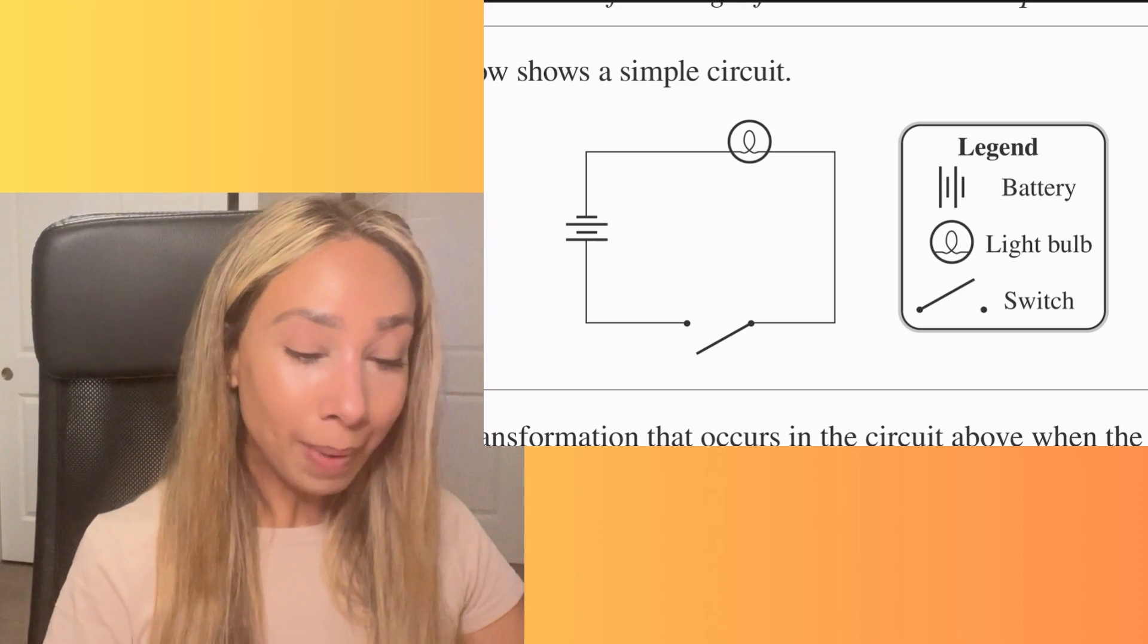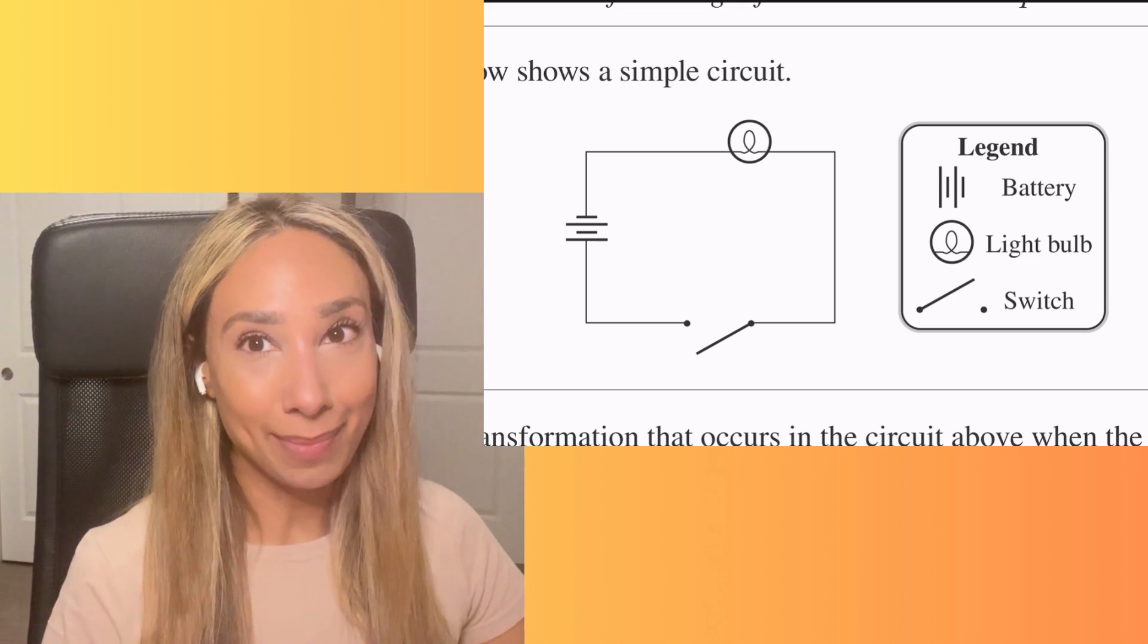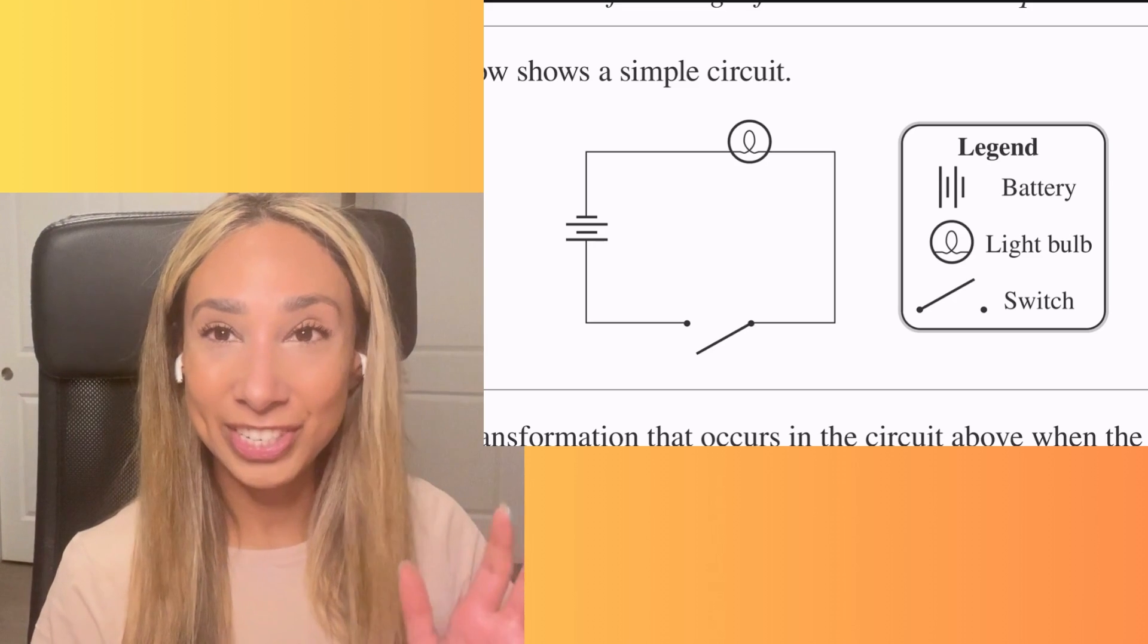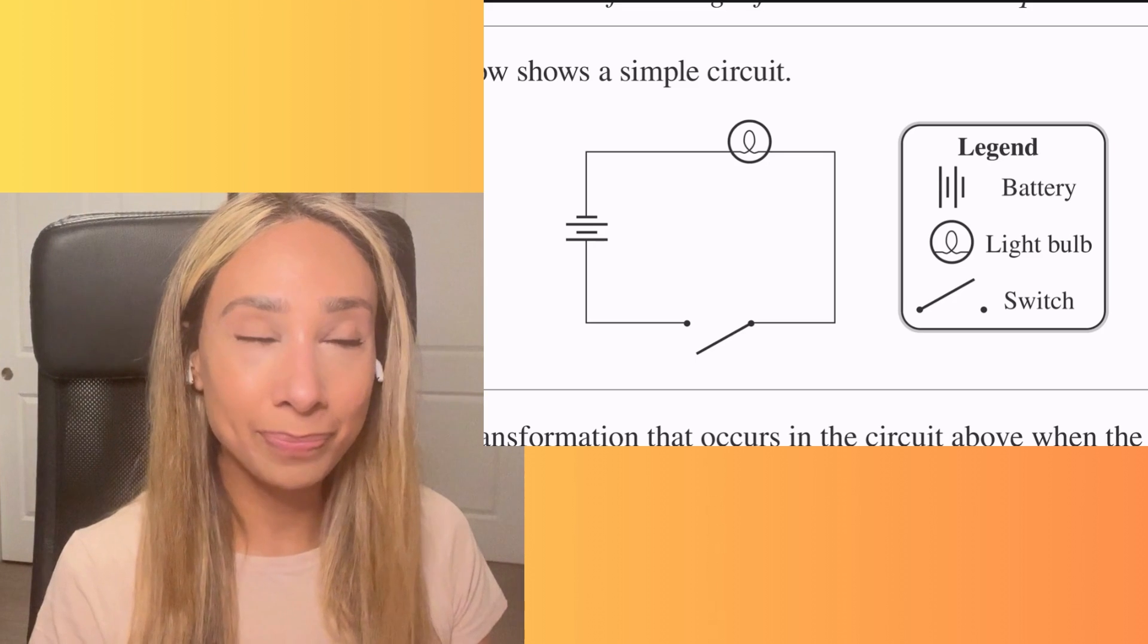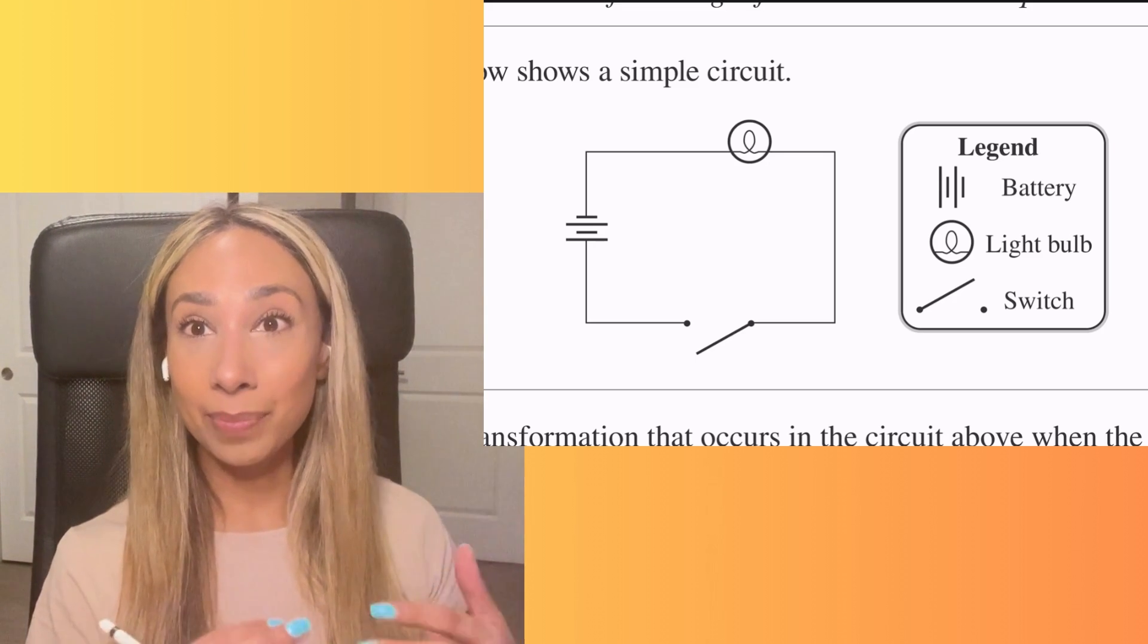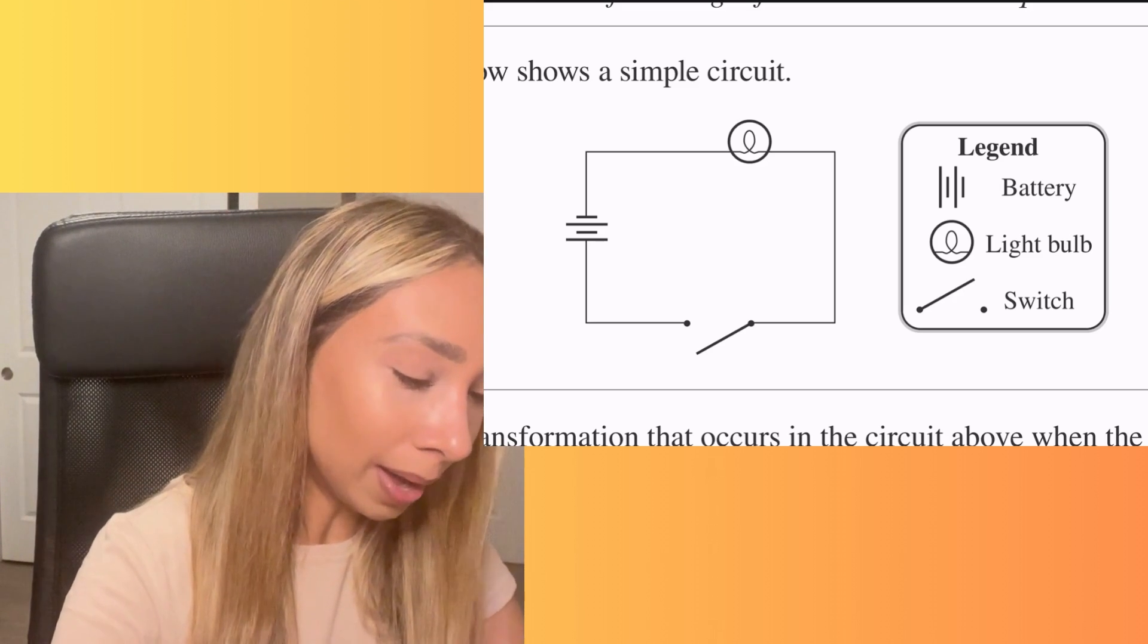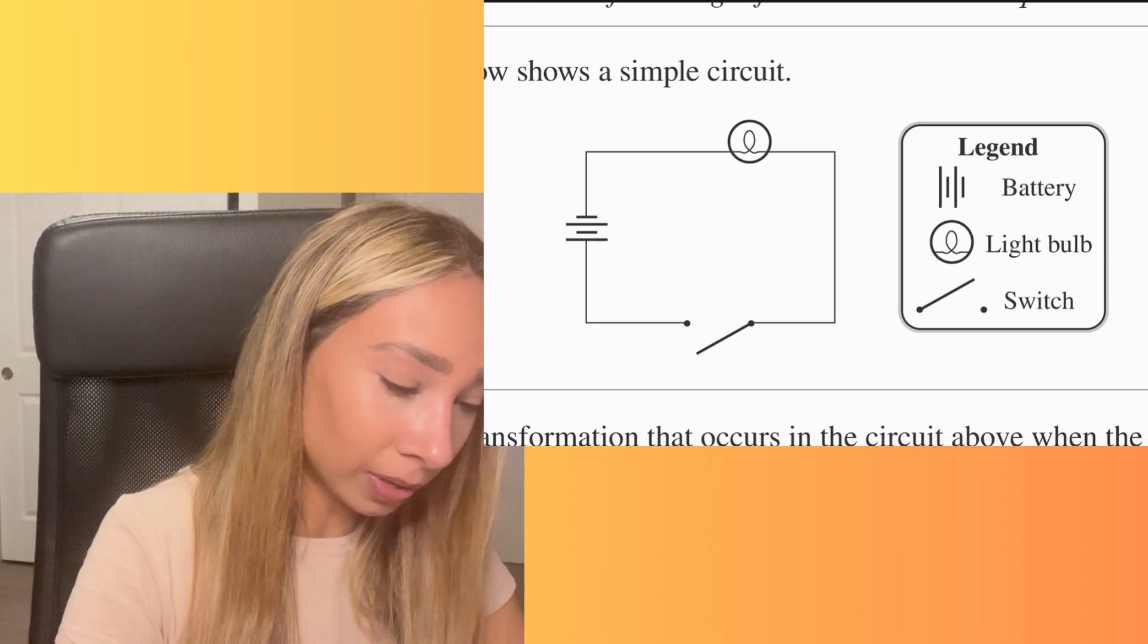So our battery, that's really going to be our chemical energy, kind of like the question we just did, right? We're converting some chemical energy or we're utilizing chemical energy and we're converting it to something that can power something. So our battery is definitely going to be chemical energy.